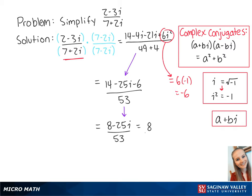we'll rewrite this to be 8 over 53 minus 25i over 53. This is the final answer.